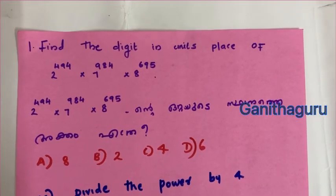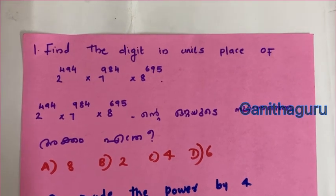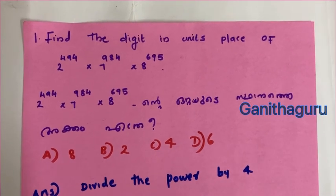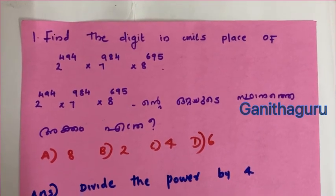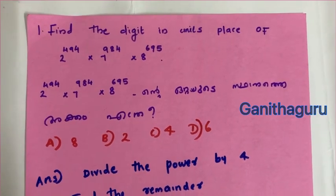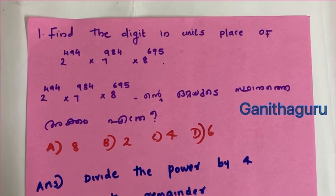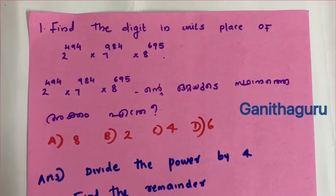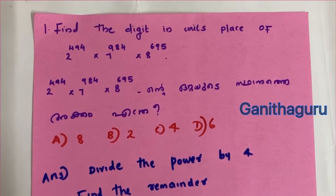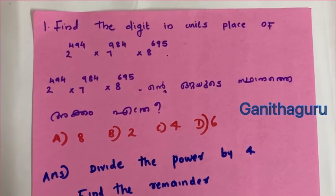First question: Find the digit in the unit place of 2 raised to 494 into 7 raised to 984 into 8 raised to 695.